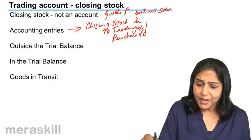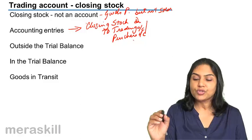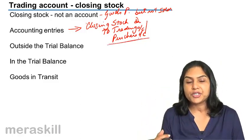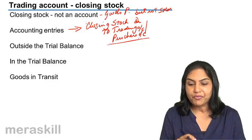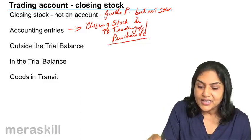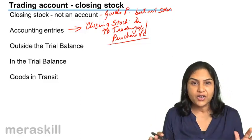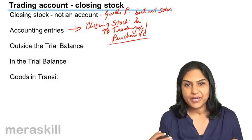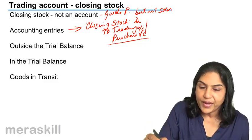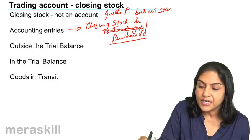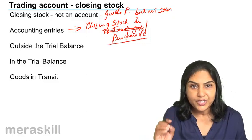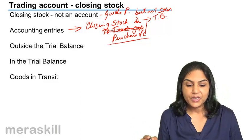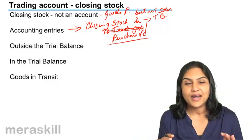If the accountant passes an entry saying Closing Stock Account debit to Purchases, it means purchases will reflect a lower figure. In that case, this closing stock need not appear in the trading account — the entry has already been passed. In this situation, the closing stock would appear in the trial balance.